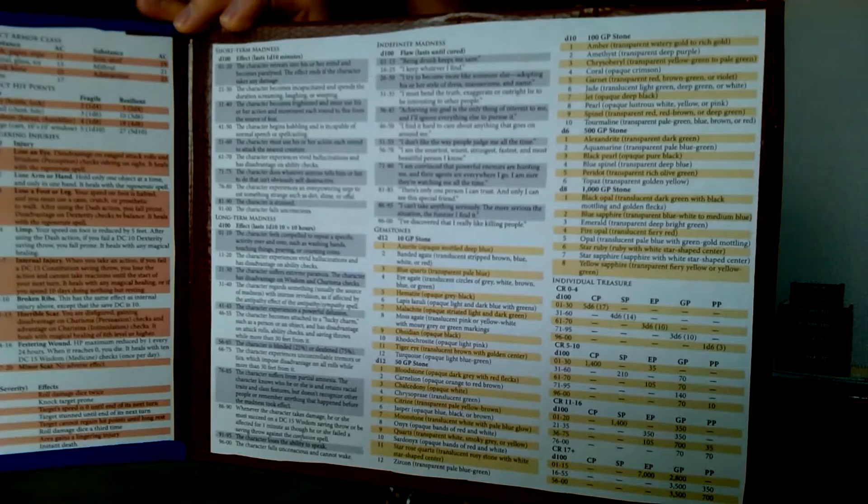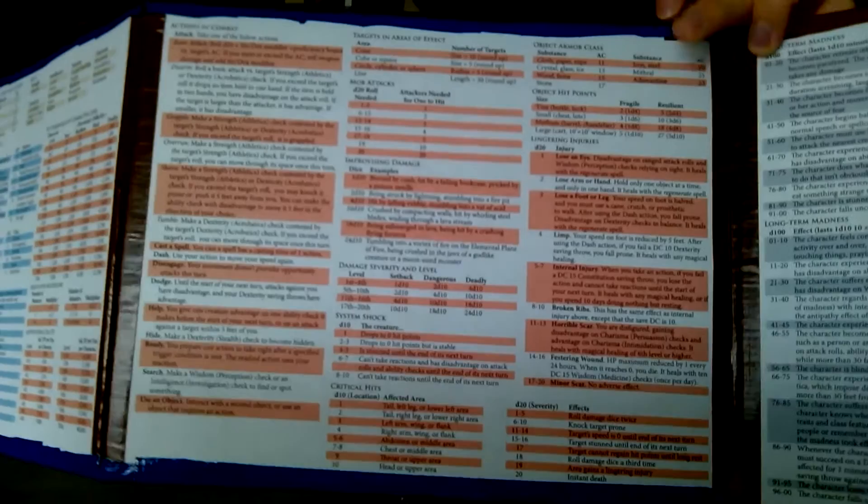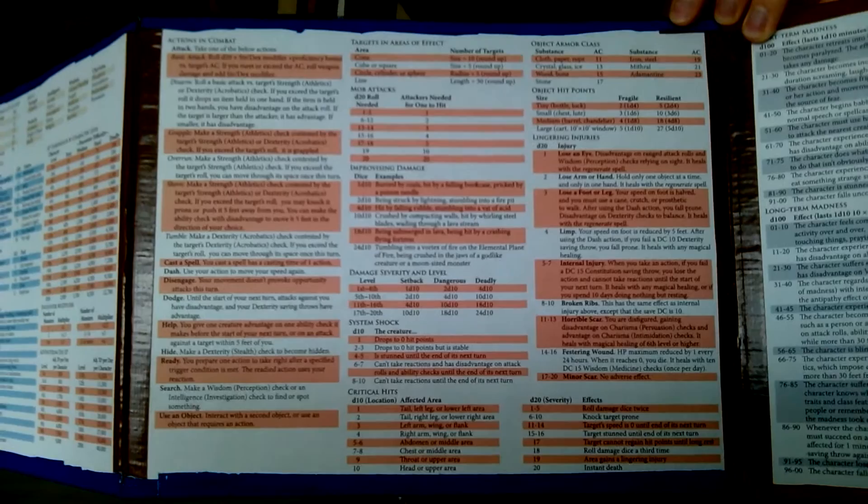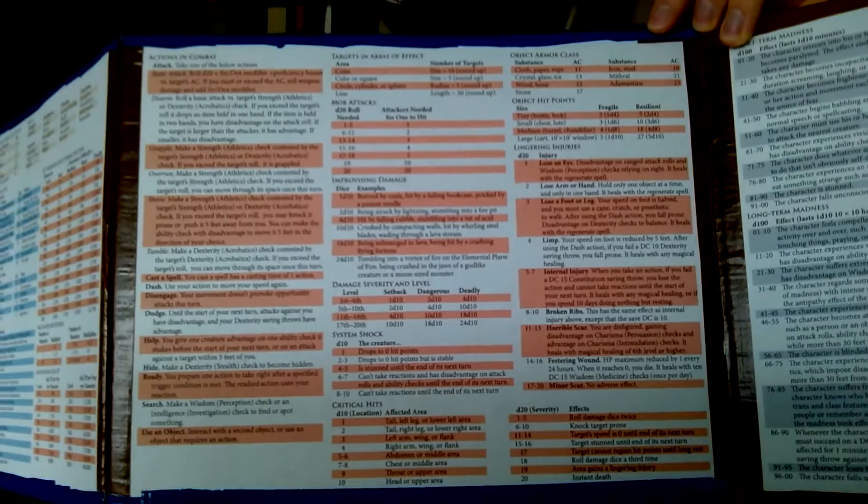This is the combat panel. It's got actions you can take in combat, DC for destroying objects, and over here on this side it's got injuries. And then along the bottom there is my custom critical hits chart. I will do a separate article about that — it's something that a lot of my players have really enjoyed at home and at conventions.